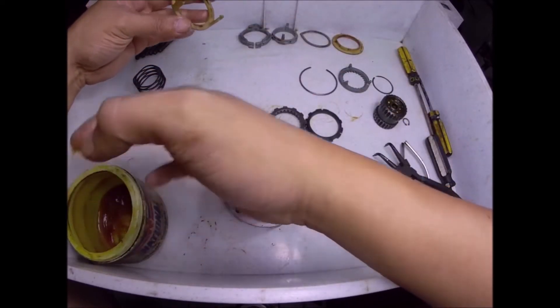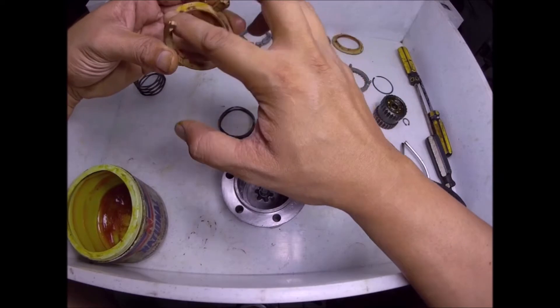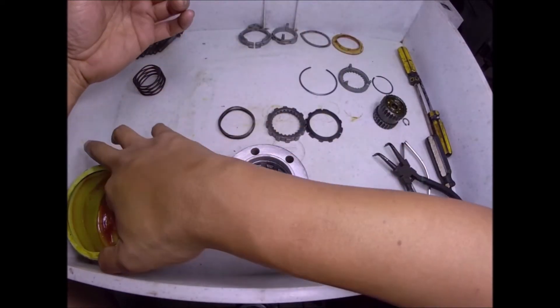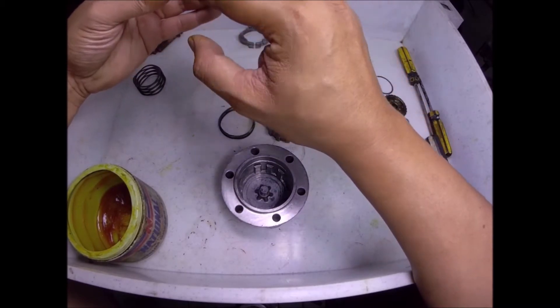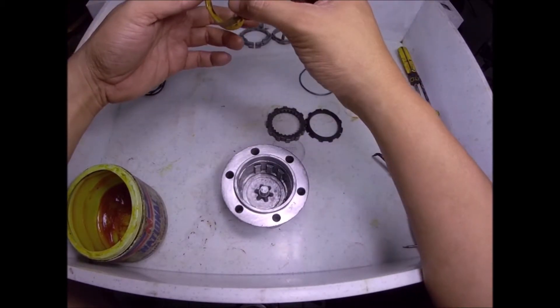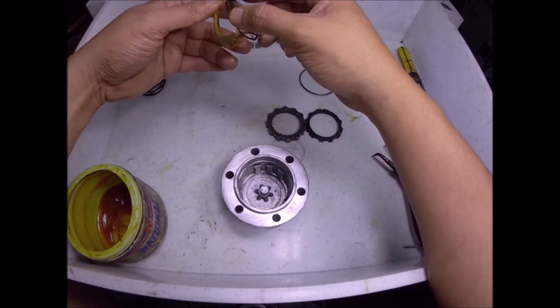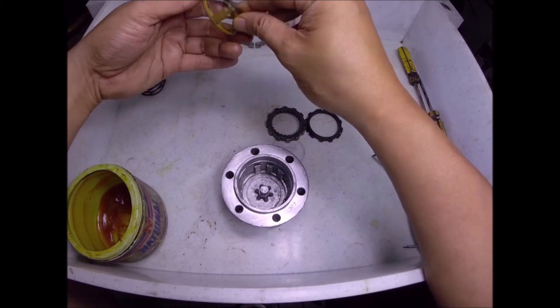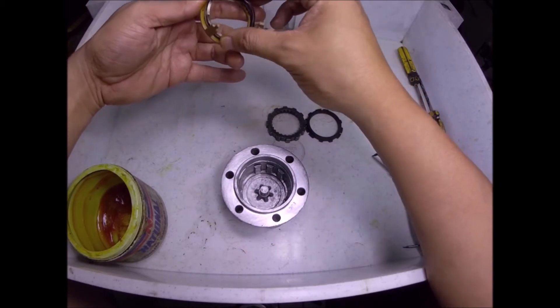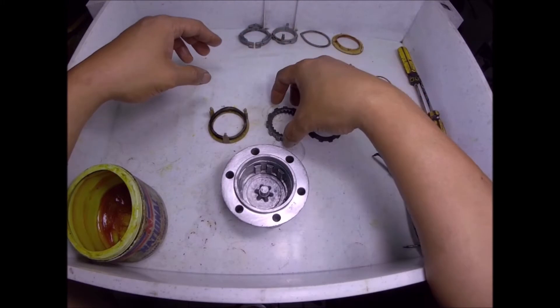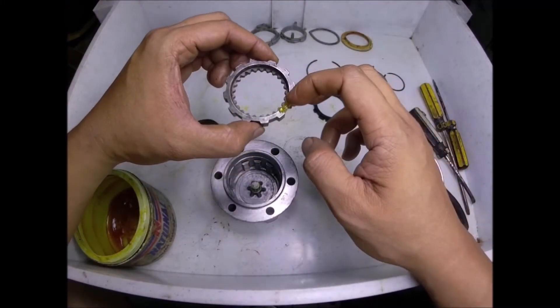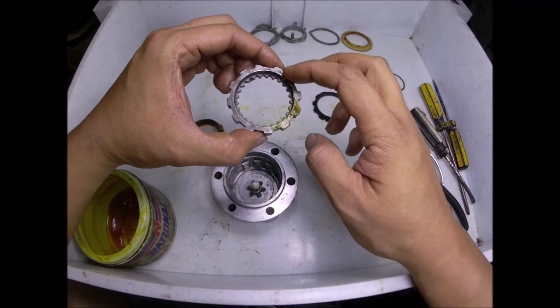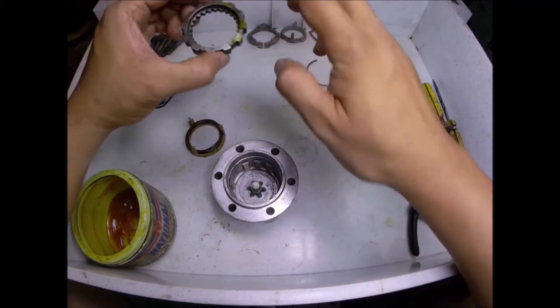Also, you need to grease this part here. It's where the spring sits. Just a thin coat of grease. Then install this back here. There's no orientation. Next is this gear here. You apply grease here. Where the spring here sits.